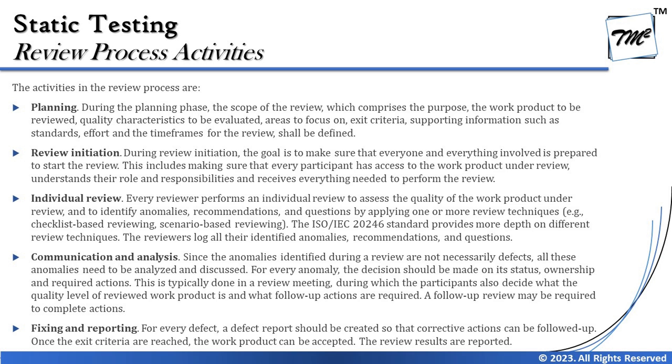The final phase is Fixing and Reporting. The author works on all open defects that could not be resolved during the review meeting and reports back to the concerned reviewer who identified them. The moderator gathers all metrics to confirm that all review activities have been completed and that exit criteria are met before closing the review process. For every defect, a defect report should be created so corrective actions can be followed up. Once exit criteria are reached, the work product can be accepted and review results are reported.